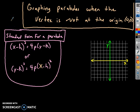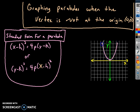This video is about graphing parabolas when the vertex is not at the origin. In the last lesson we learned all about graphing parabolas when the vertex was at the origin, where we have a vertex at (0,0) and a parabolic shape.